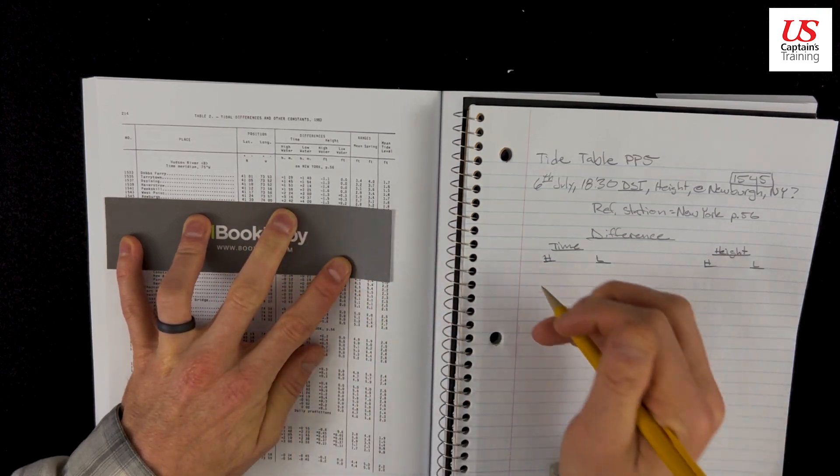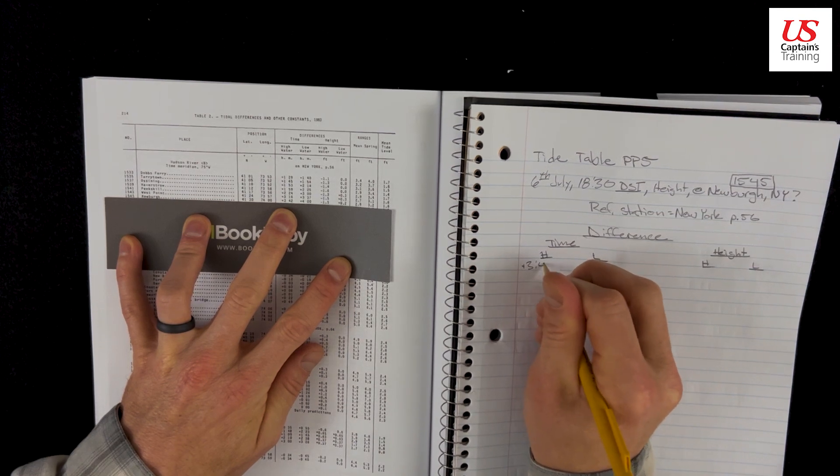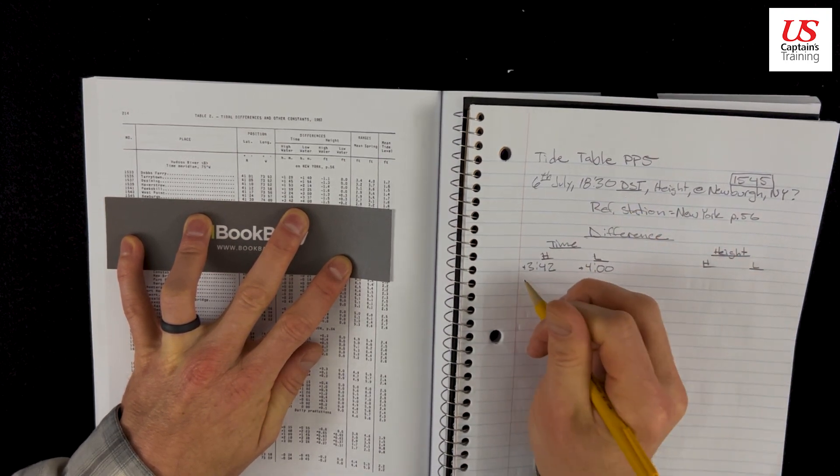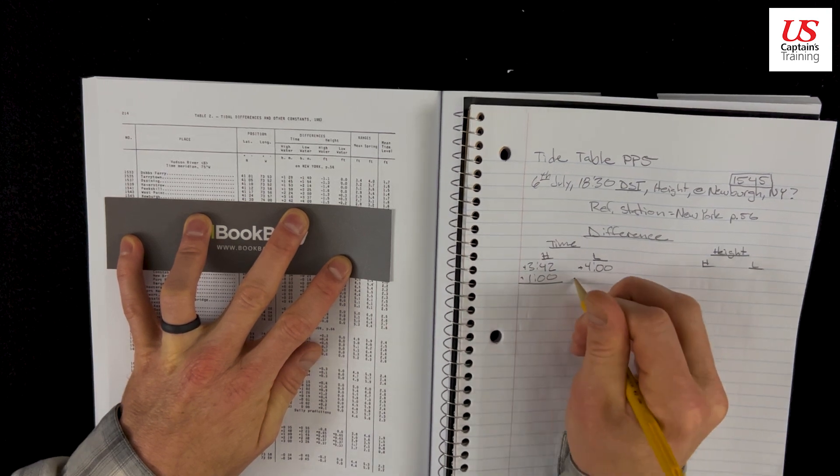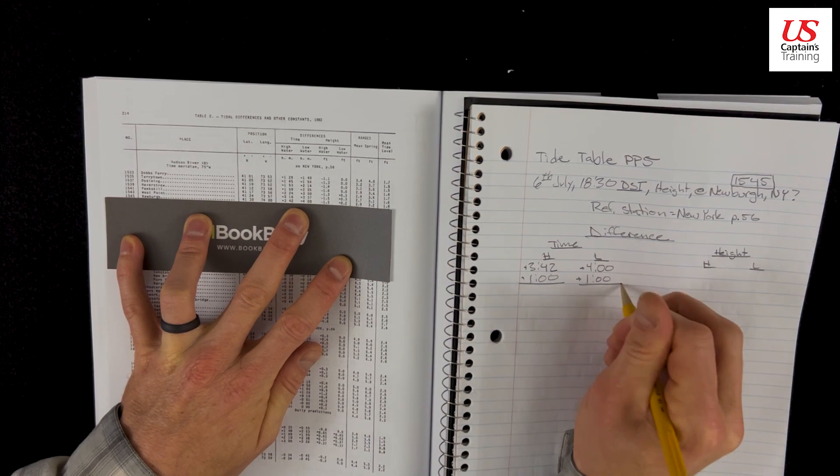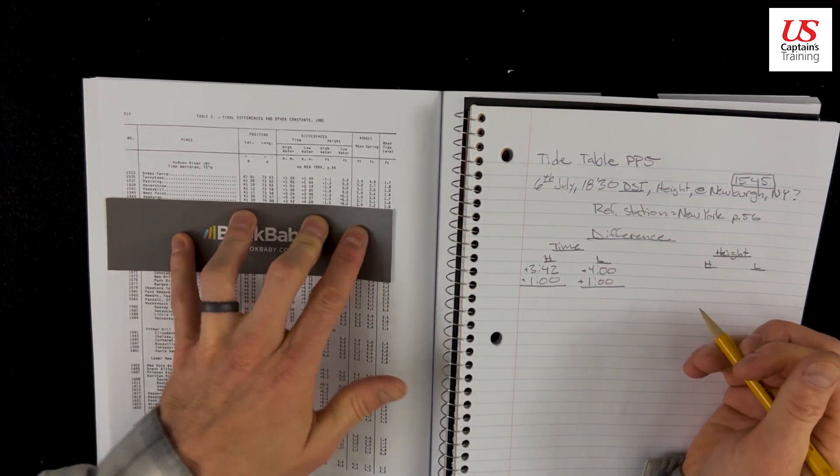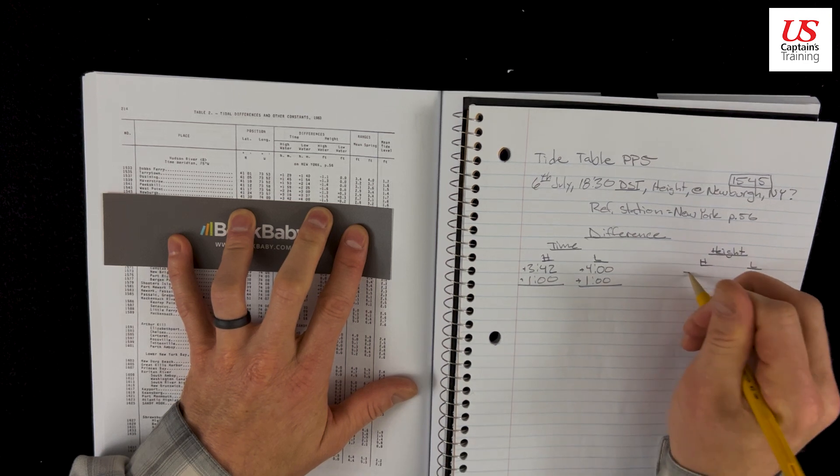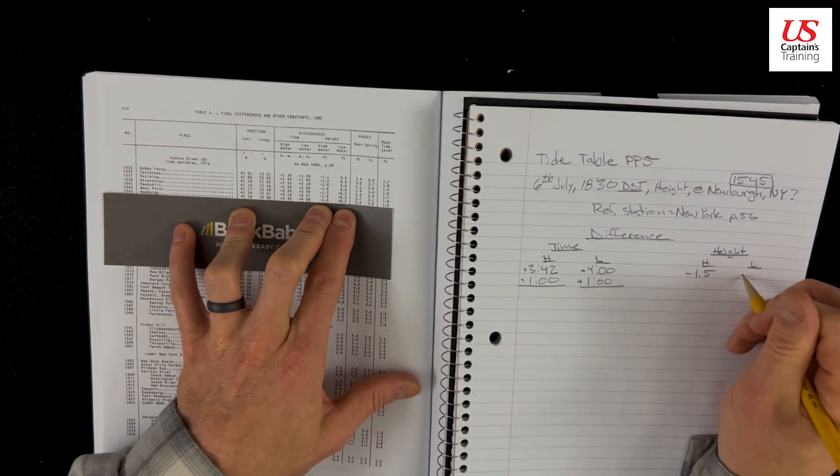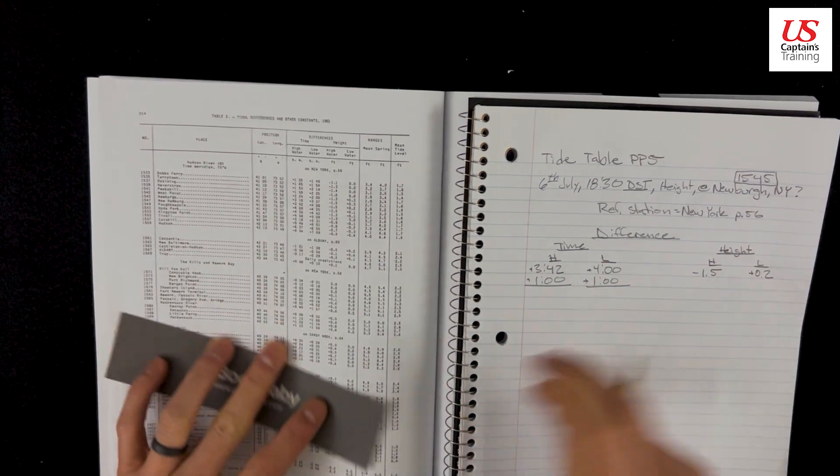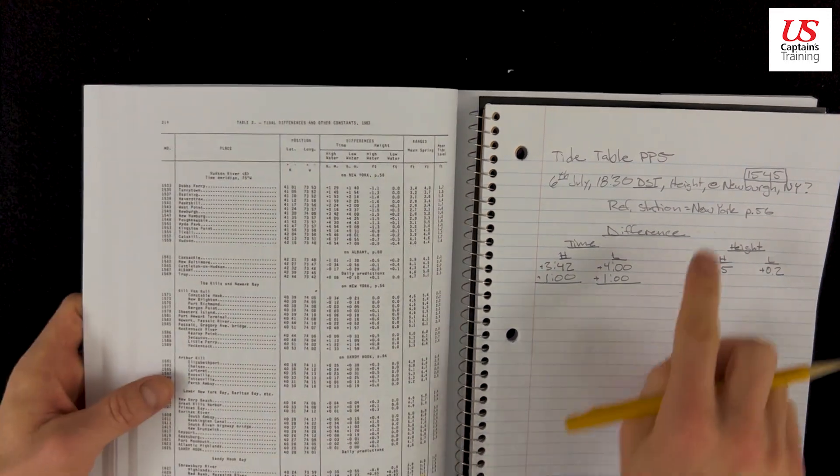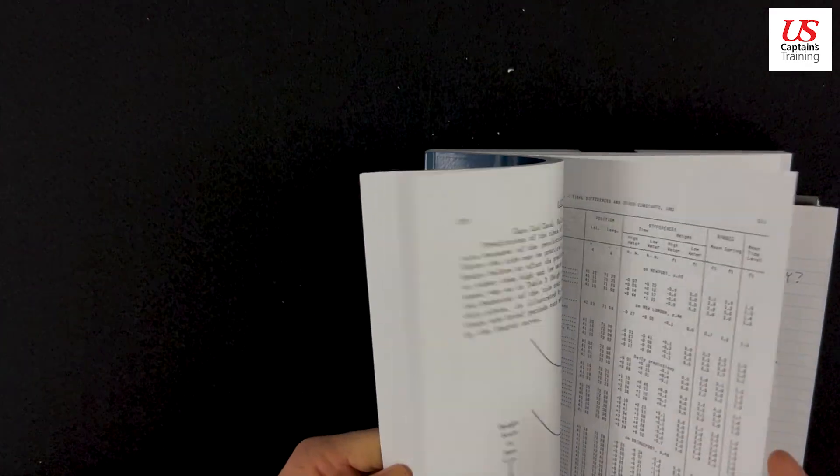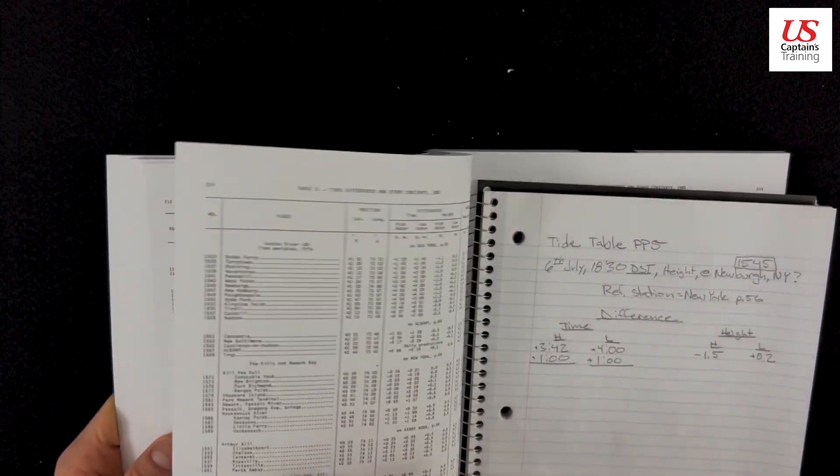So plus 342. Plus 342, plus 4. These are big time corrections. And it's DST. We're going to add another hour. Monster time corrections. And now our height of the high is minus 1.5, minus 1.5, and plus 0.2, plus 0.2. Okay. Now let's flip. We need to find our reference station.